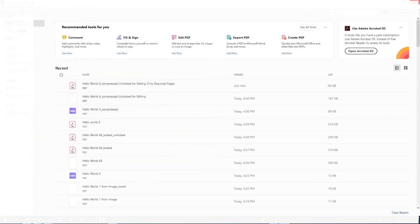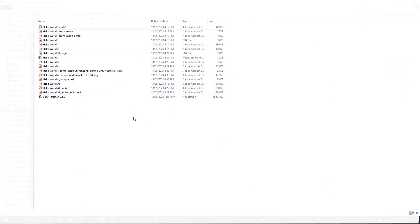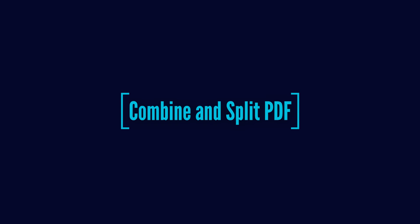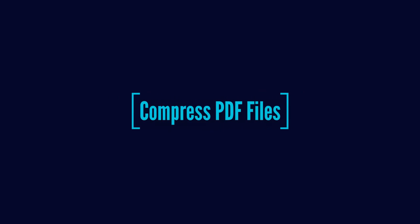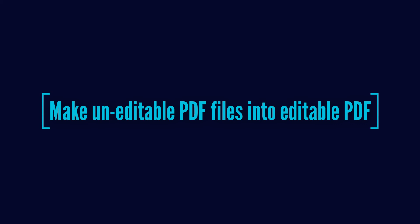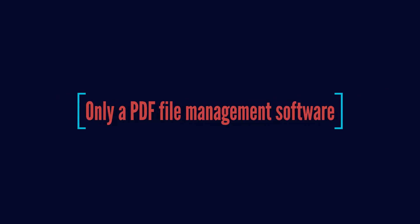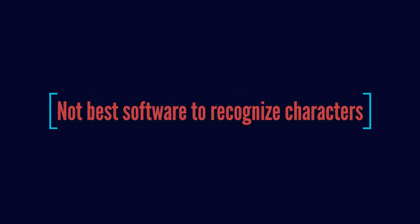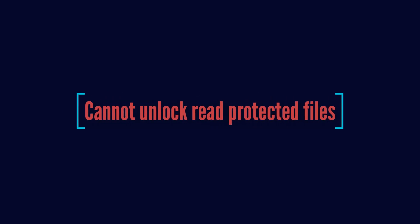So now you can see how powerful this software is and it's completely free. Summary: You can use the software to convert PDF files to other formats and vice versa. You can lock and unlock PDF files. You can combine and split PDF files. You can compress PDF files and recognize characters in a PDF. You can also use the software to make uneditable PDFs into editable PDFs. Limitations: This is only a PDF file management software — you cannot edit PDF content with it. It is not the best software for character recognition; it is better to convert pages to images and use Microsoft OneNote for that. This software cannot unlock a PDF if it is not allowed for read-only and you do not know the password.